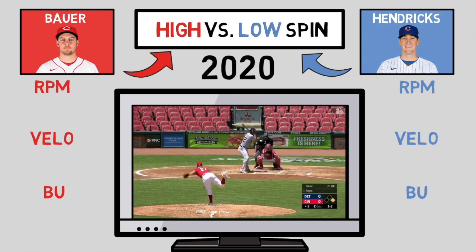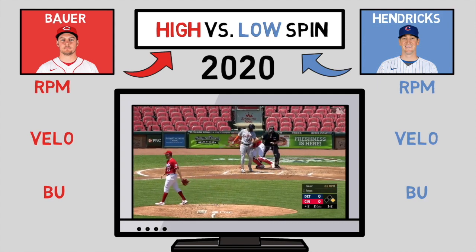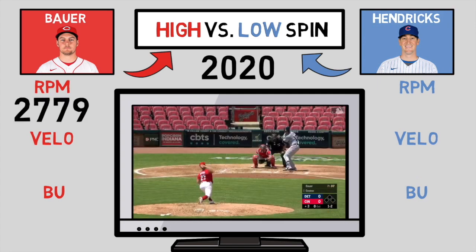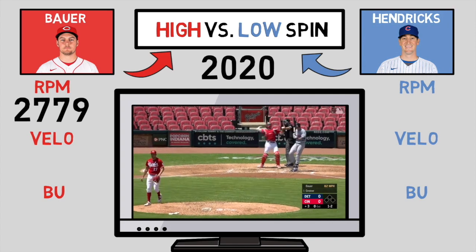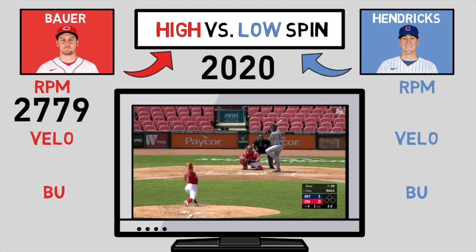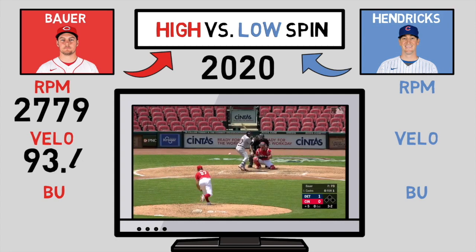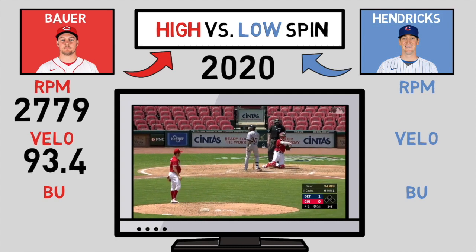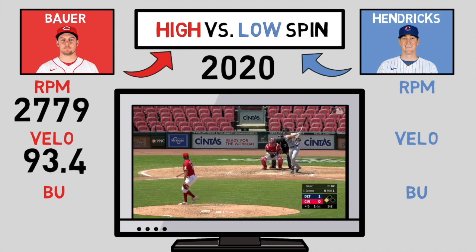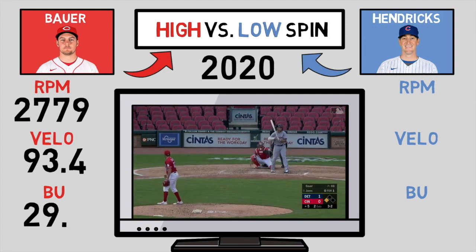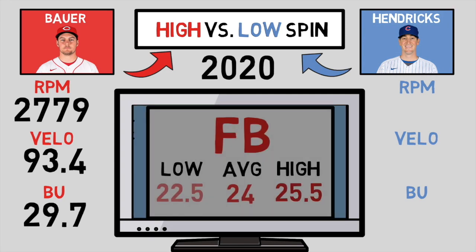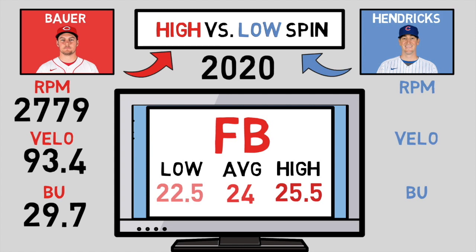Bauer actually led the MLB with the highest fastball spin rate of any qualified pitcher, with a final number coming out to nearly 2,800 — that's 500 RPMs above the average. His average velocity came out to be 93 miles per hour, and if we take our spin rate divided by our velocity, we get 29.7 Bauer units. Taking a look back at that last slide, we will notice that his Bauer units definitely fall in the above average slot, by a lot.